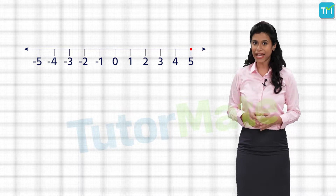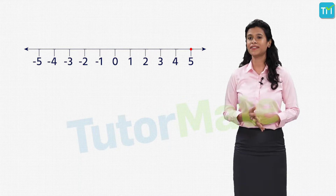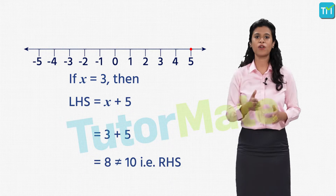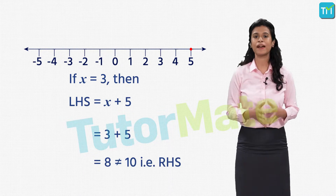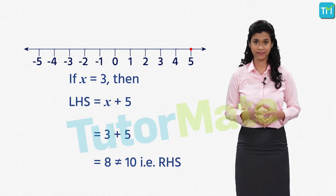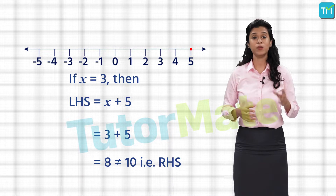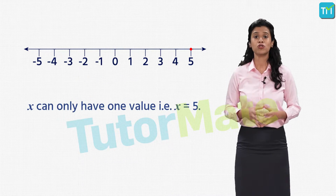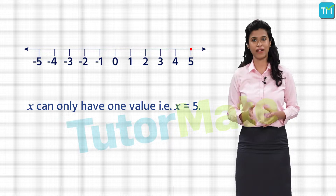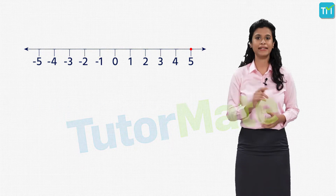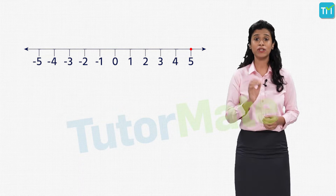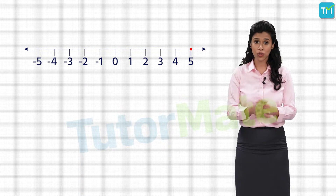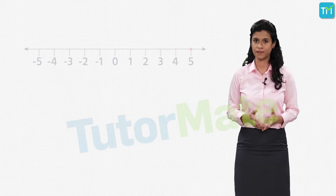Now can X have any other value? Think about it. If we put X equal to, say, three, the LHS of the equation would be three plus five which is eight — but eight is not equal to ten, which is the RHS. When the left-hand side and right-hand side are not equal, it's not a true equation. So X can only have one value: X is equal to five. This means this linear equation has a unique solution and cannot have more than one solution.